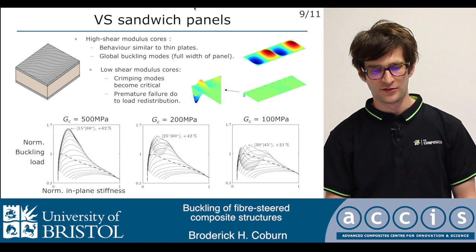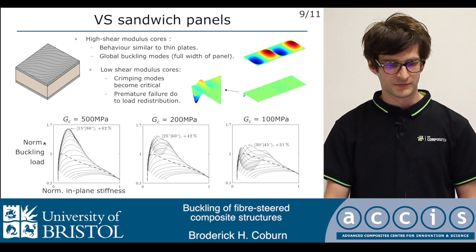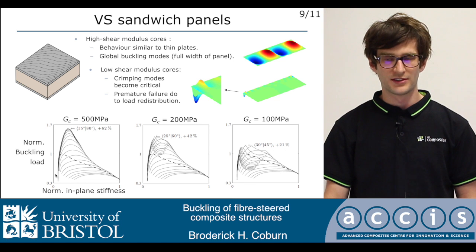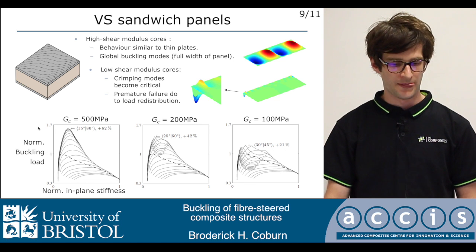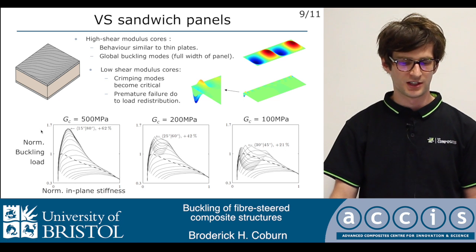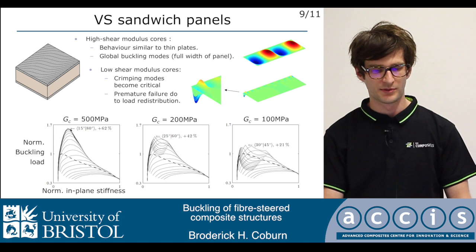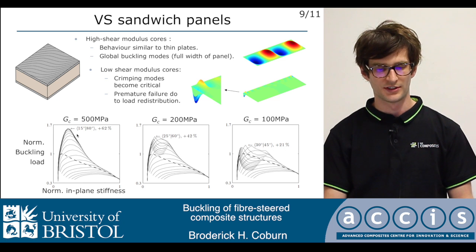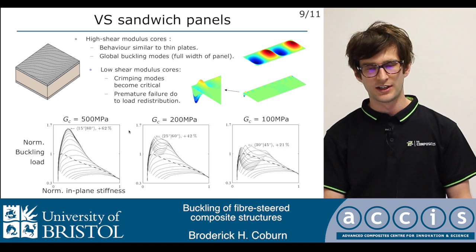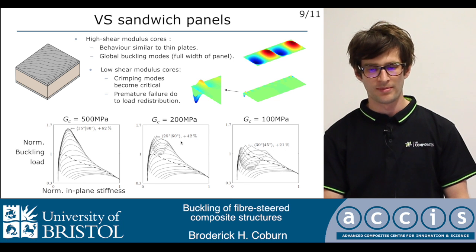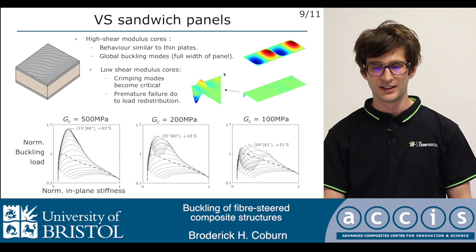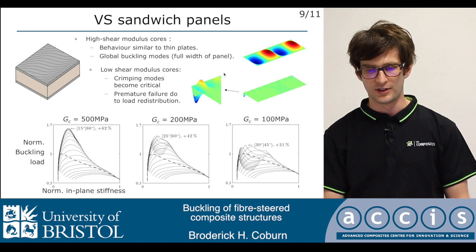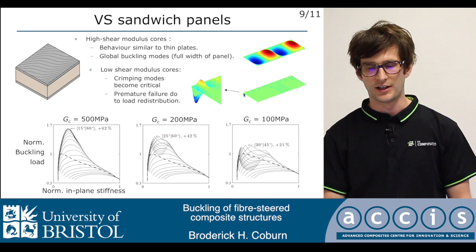For the variable stiffness sandwich panels we again include first-order shear deformation theory. We've shown that for thick cores with a very stiff shear modulus, you get the same improvements as in thinner structures. A plot of normalised in-plane stiffness against normalised buckling load shows the extra design space provided by variable stiffness compared to straight fibre plies. For a high shear modulus core of 500 MPa, you get a 62% improvement, but as you reduce the core modulus this improvement reduces. The variable stiffness redistributes loads, which is beneficial in some cases; however, it also creates local peak in-plane stresses, causing crippling at very low loads.